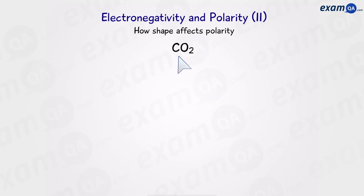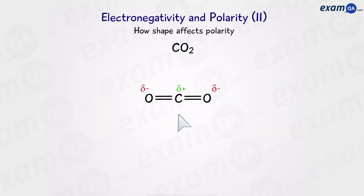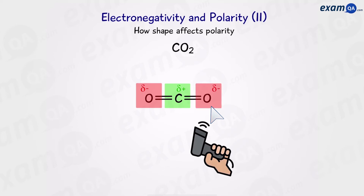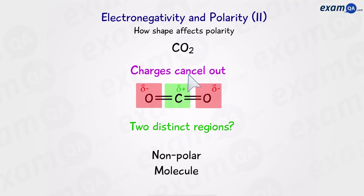Let's use carbon dioxide as another example. Carbon dioxide looks like this. Carbon has an electronegativity of 2.5 and oxygen 3.5, so a difference of one, which means we're going to have polar bonds. Now let's find out if it's a polar molecule. This is actually the 3D shape of carbon dioxide — it's a linear molecule, so we don't have to draw it in any special way. Scanning from one end: we have a negative area, moving across there's a positive area, then moving across again we have a negative area. So there aren't two distinct regions — we have negative, then positive, then negative again. The charges cancel out, and we have a non-polar molecule.